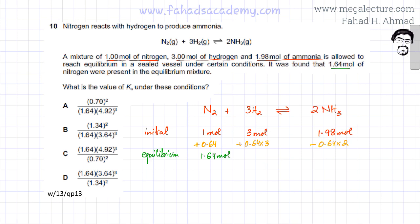So my final equilibrium moles for H2 are going to be 3 plus 0.64 times 3, which is going to give me 4.92 moles. And my equilibrium moles for NH3 are going to be 1.98 minus 0.64 times 2, so this would become 0.70 moles. And so I have the equilibrium moles of all three of my reactants and my products.